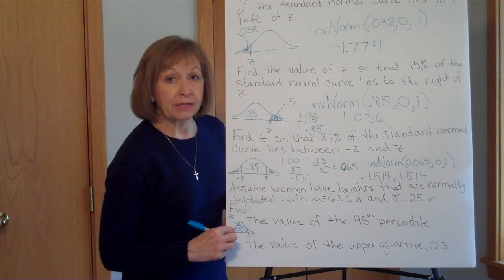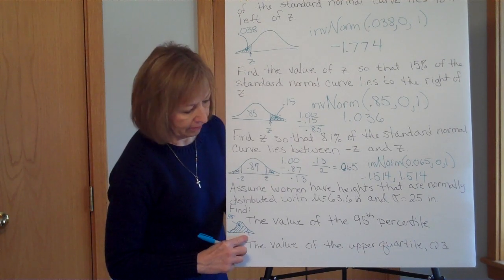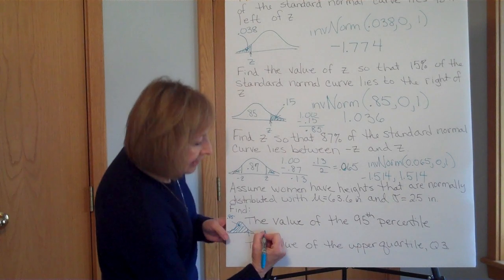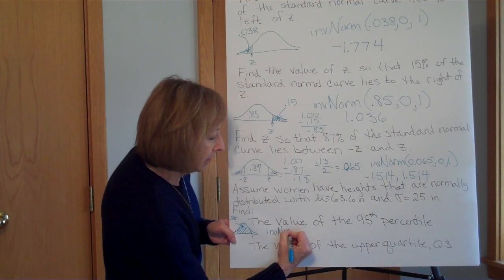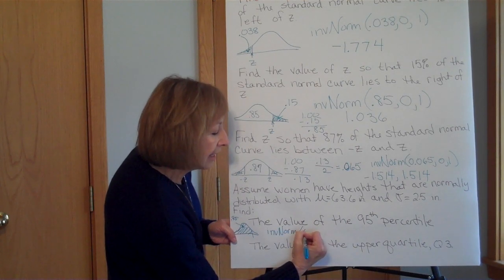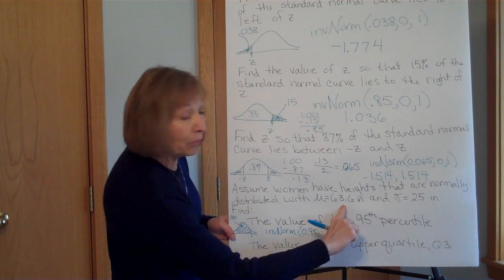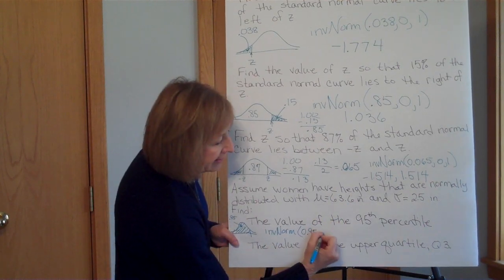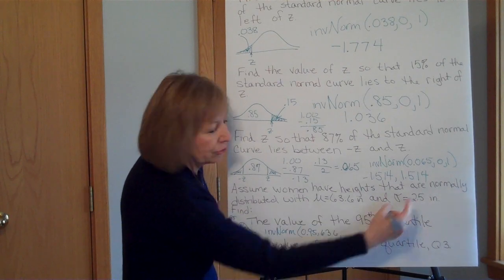So this is my 0.95 area. So again, I have the percent or the area and I want to get this time the raw score back. So again, it's inverse norm. Area to the left of the cutoff is 0.95.